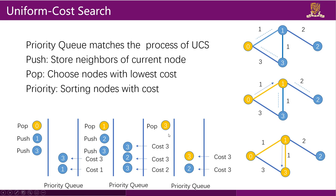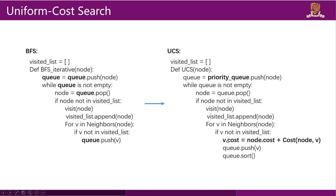To write the UCS code, start from the BFS algorithm, replace the queue with a priority queue, and add a line to compute the cost of a neighbor as the cost of the current node plus the edge weight to that neighbor. In most cases the priority queue handles sorting automatically.